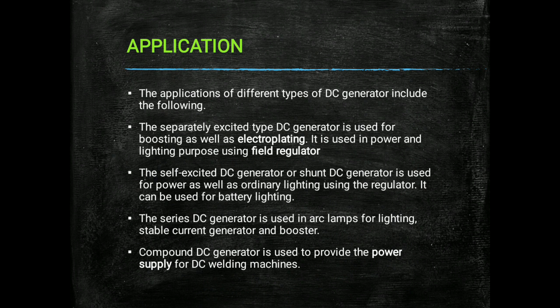The compound DC generator is mainly used to provide power supply for DC welding machines, also called DC arc welding machines, where an electric arc is used for welding two metallic parts or plates. These are the applications of DC generators.